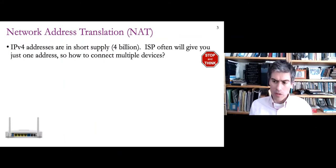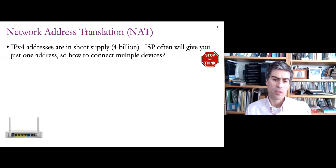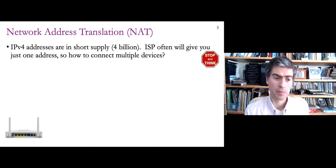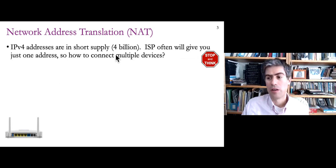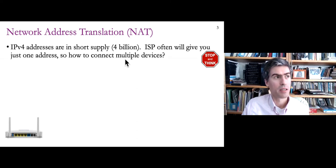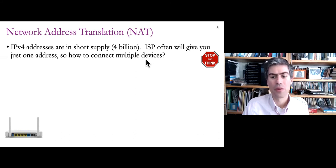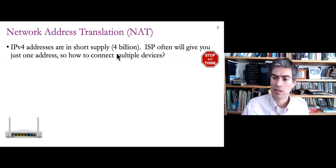IPv4 uses addresses that are 32-bit numbers. Two to the 32nd power is approximately 4 billion, so there are only 4 billion IPv4 addresses. When IPv4 was first invented in the early 80s or late 70s, that seemed like enough. But nowadays it's not — there are more devices that want to use the internet than there are IPv4 addresses.